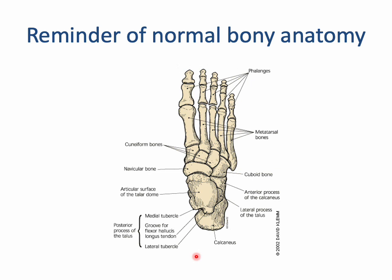Briefly touching on normal foot and ankle anatomy, we've got the talus and the calcaneus with the subtalar joint between them, the navicular, the cuboid, and the lateral, middle and medial cuneiform bones, five metatarsals, and proximal, middle and distal phalanges.